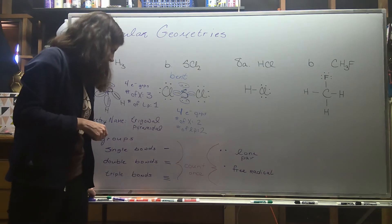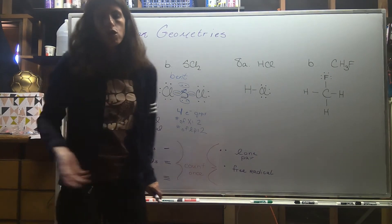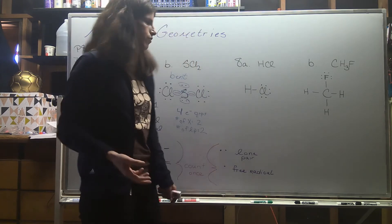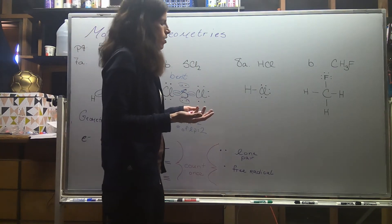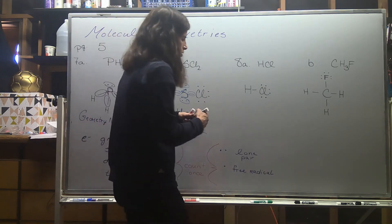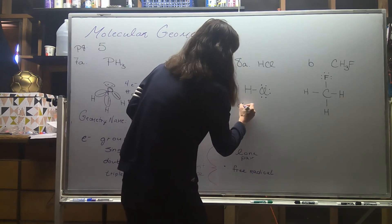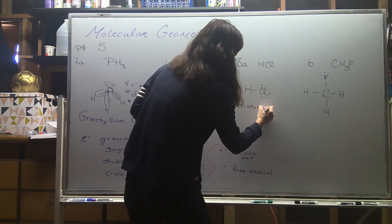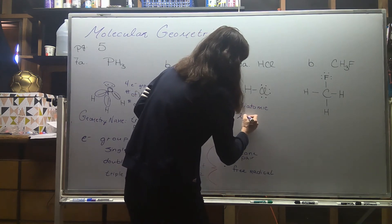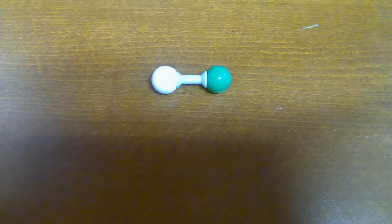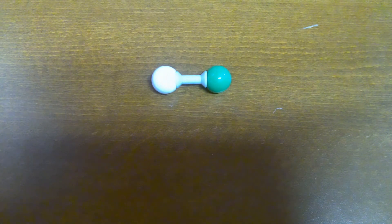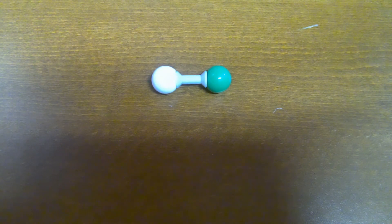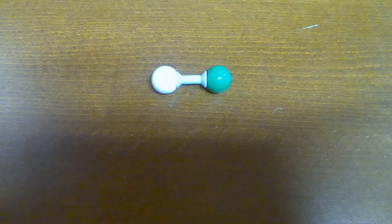Hydrochloric acid is an interesting example — there's no central atom. Don't even use your table for hydrochloric acid. Diatomic molecules are always just going to be linear; there's nothing else they can do. We know from geometry that two points in space can only be connected by a line, and the same holds true for diatomic molecules.